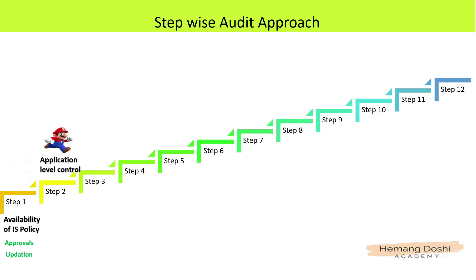Step 2 is about auditing the controls related to applications. As an auditor, you need to check whether the application is appropriately categorized, whether each application is owned by a dedicated owner, how many factors of authentication are applied, and whether user access review is conducted for each of these applications at periodic intervals. We will discuss this in detail in our Step 2 video.